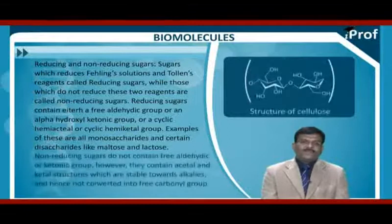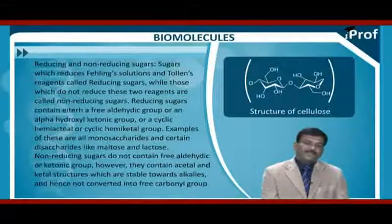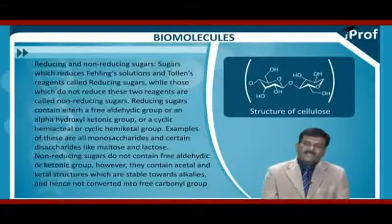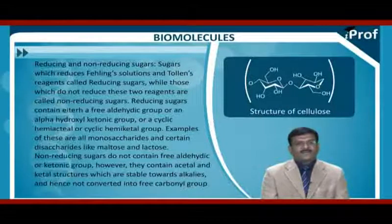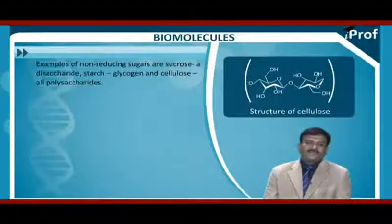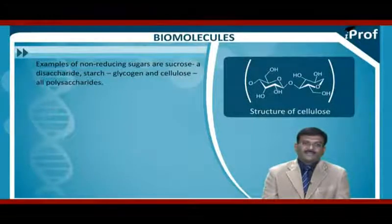Non-reducing sugars do not contain free aldehyde or ketonic groups. However, they contain acetal or ketal structures which are stable towards alkalis and hence not converted into free carbonyl groups. Examples of non-reducing sugars are sucrose (a disaccharide), starch, glycogen, and cellulose — all of which are polysaccharides.